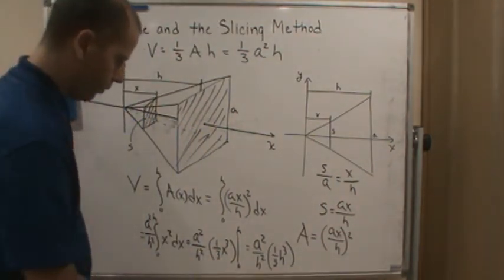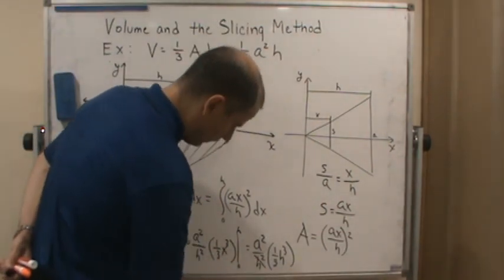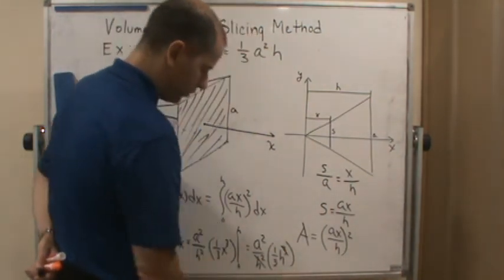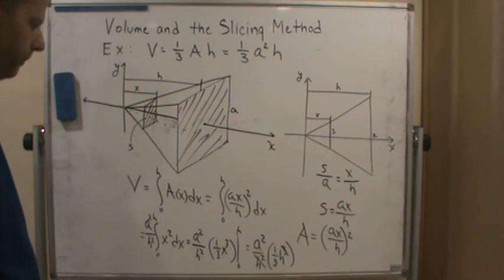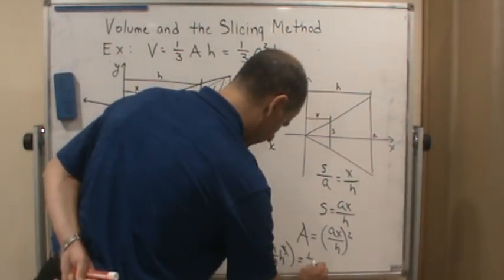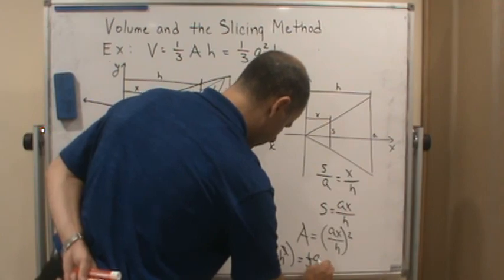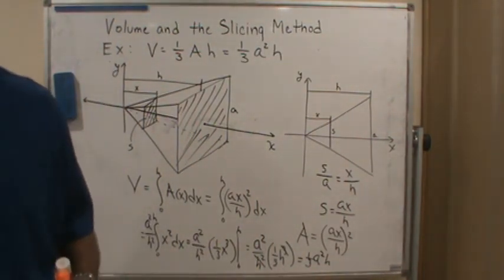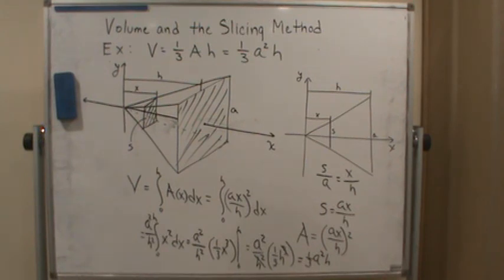And then what happens? These two h's cancel with two of the h's here. And what do we get? We get one-third a squared h. And we got the result. So it works. See you next time.